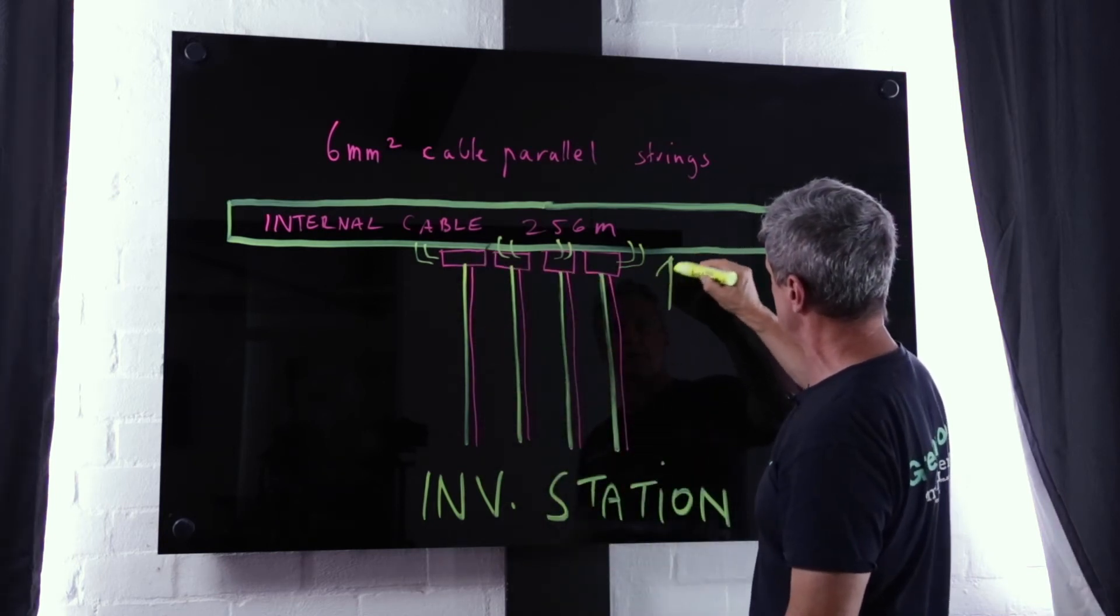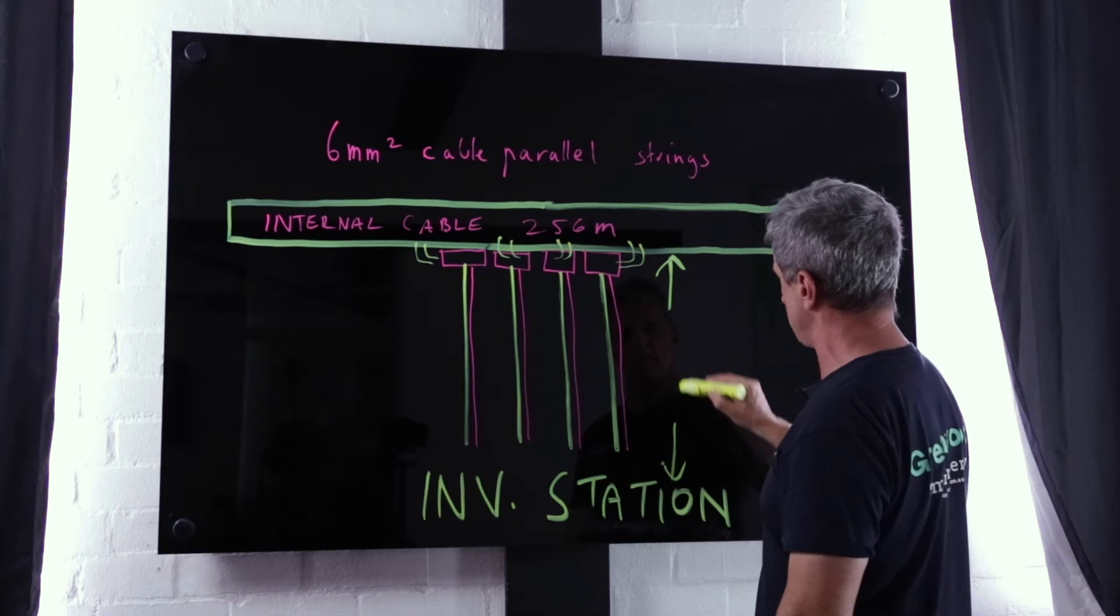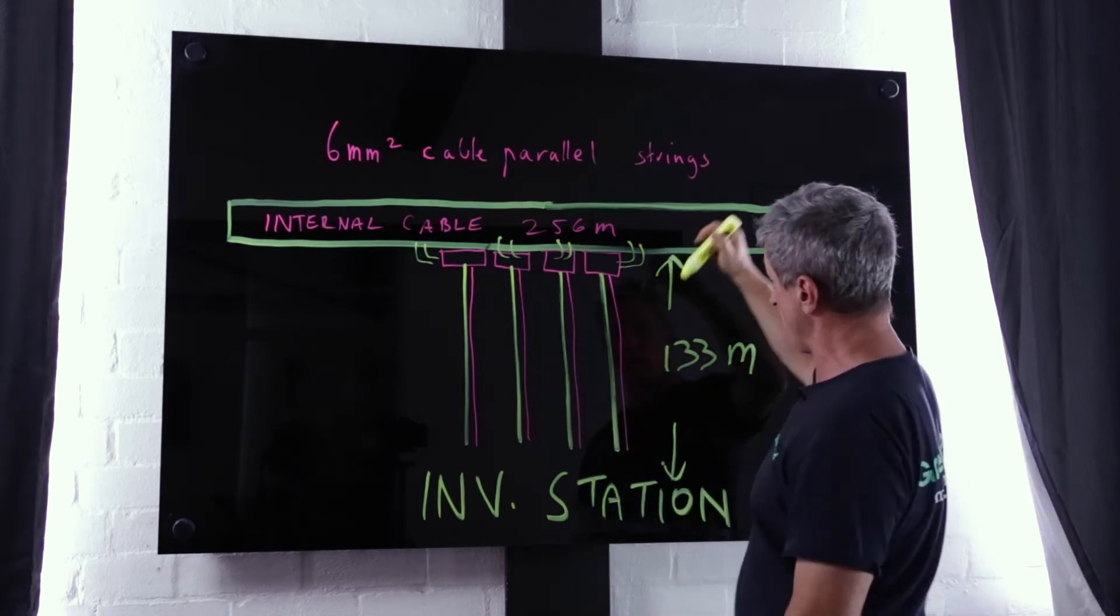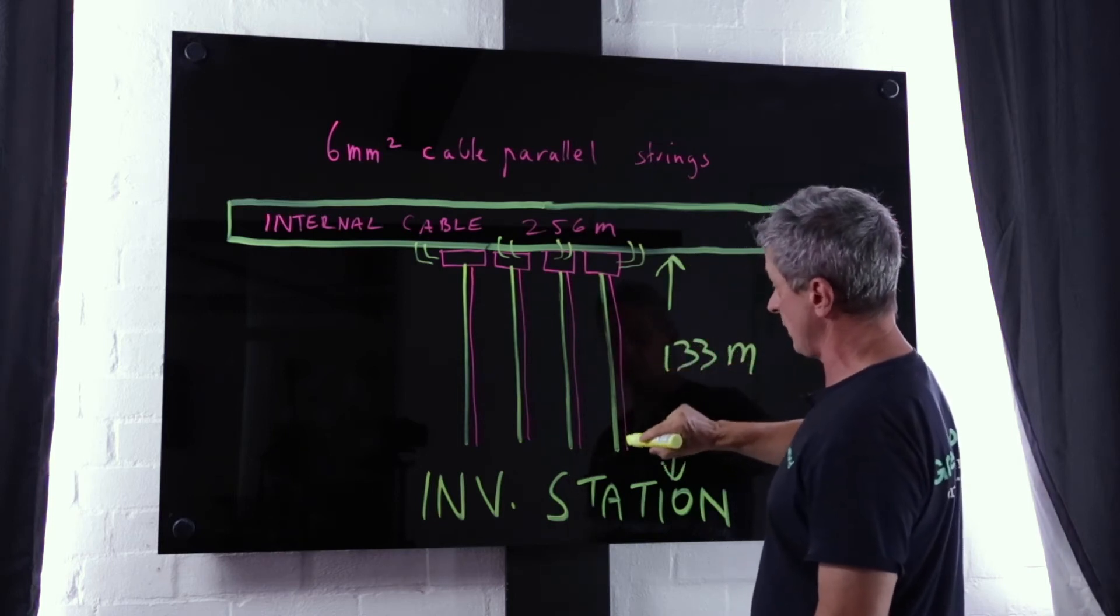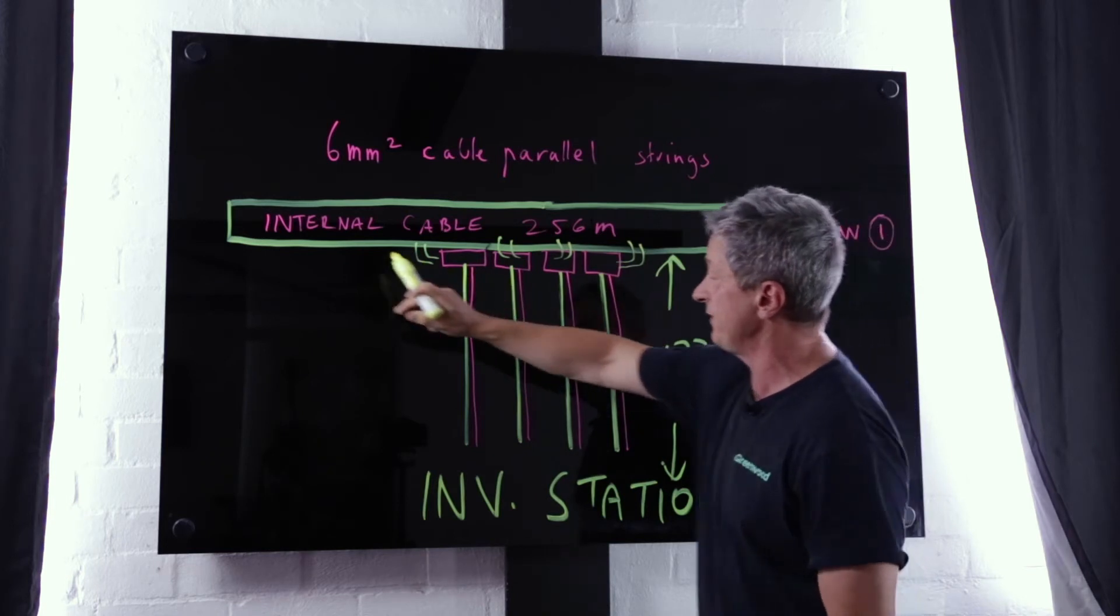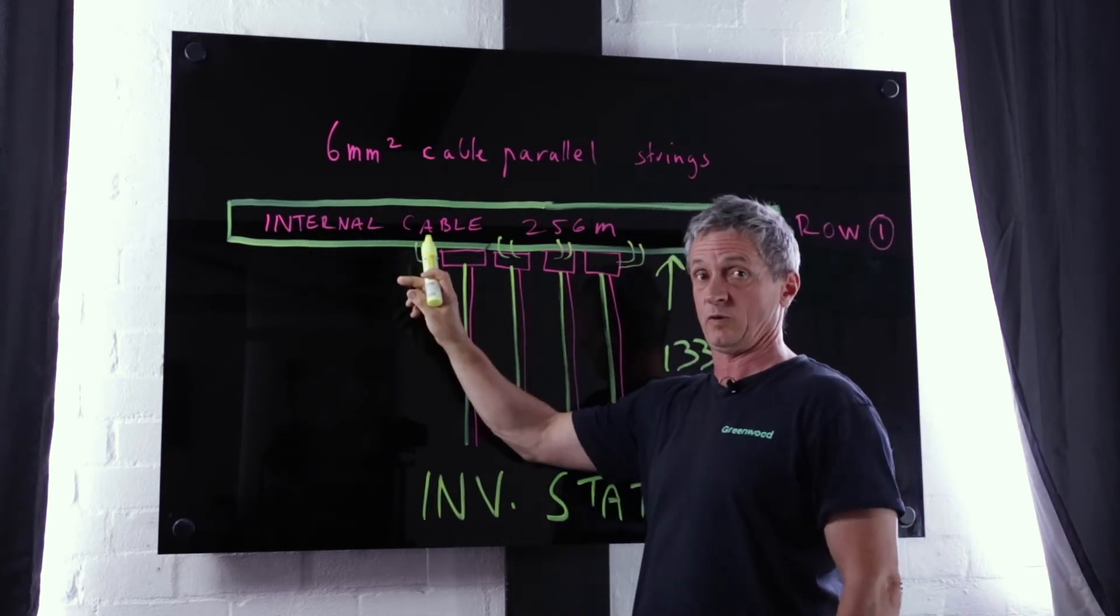So we're doing our volt drop calculations first on this run and then on the internal runs as well. Now in the 4mm calculation we went worst case scenario, the string that's furthest away from the centre was 166 meters of cable that run from there all the way through.